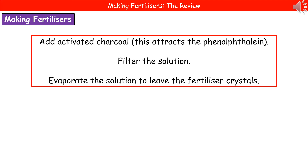Once we've carried out our titration and reached the end point, we add activated charcoal to the solution. The idea is that it attracts the phenolphthalein indicator. We then filter the solution, leaving just our salt in solution. When we evaporate the solution off, we are left with our fertilizer crystals.